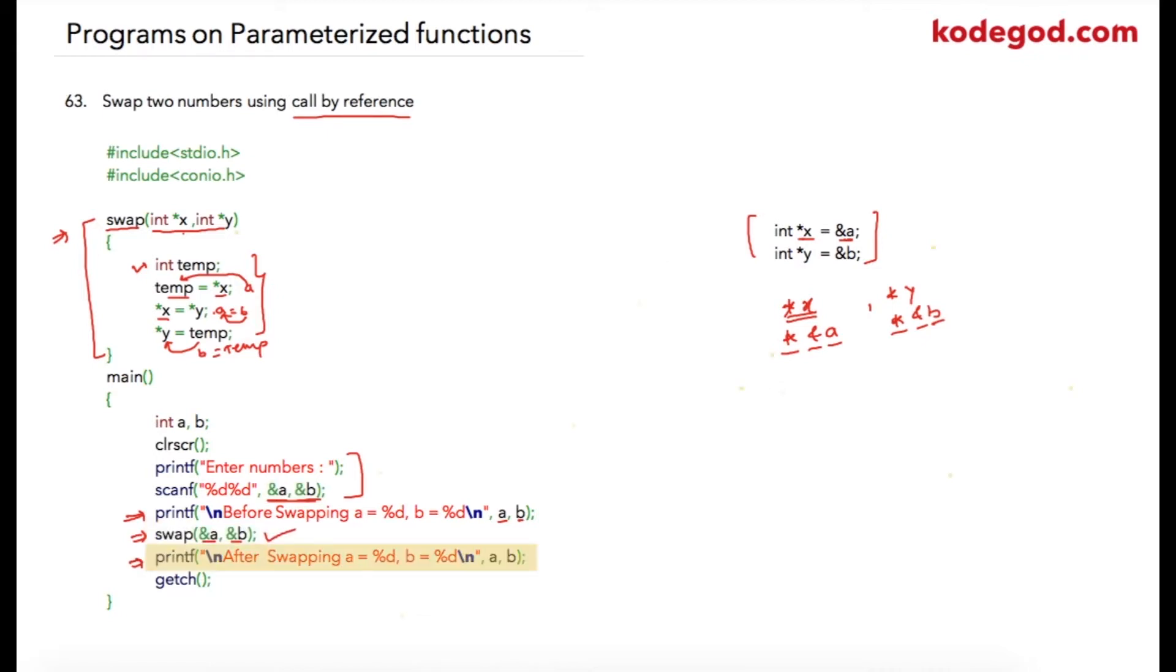And after that I'm just printing: after swapping, a is equal to a and b is equal to b. So values will be swapped. If we have entered let's say 10 and 20 here, output will be 20 and 10.